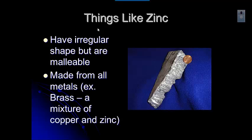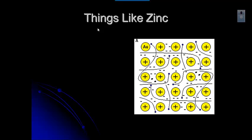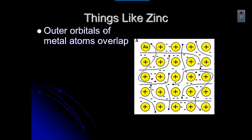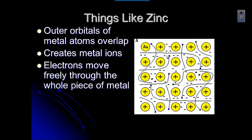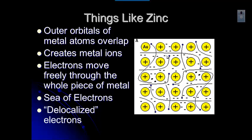Metals are always made from all metals. For example, if you have anything in your house that's brass, that's actually a mixture of copper and zinc. What you have is metal atoms sitting close together. The electrons leave their home atom and move around through the different metal atoms, creating metal ions that have lost electrons. The electrons move freely through the whole piece of metal, and we call that a sea of electrons. Those electrons are delocalized.